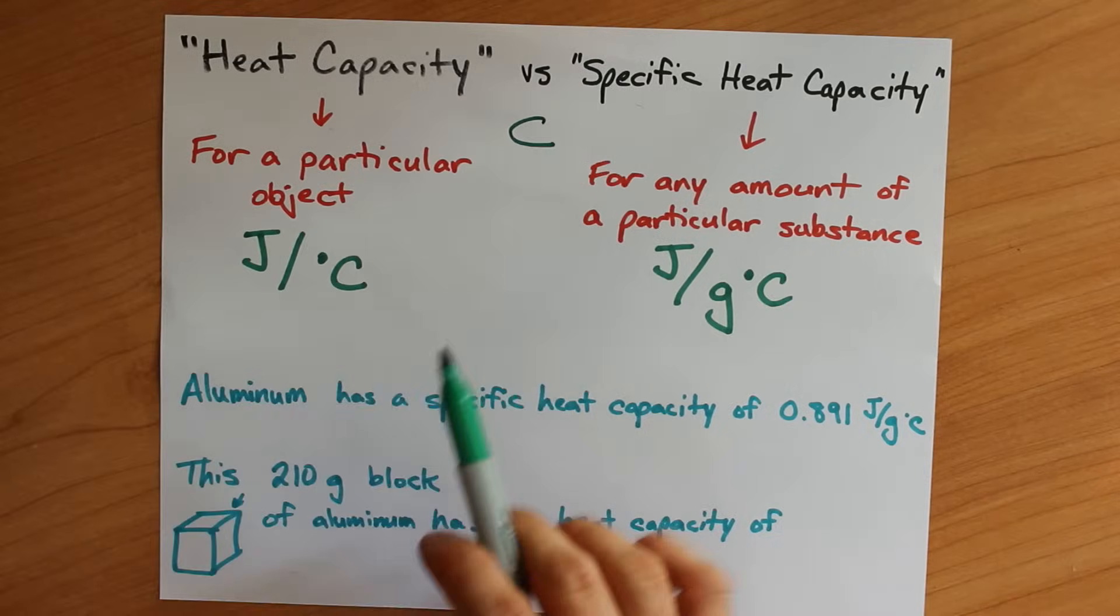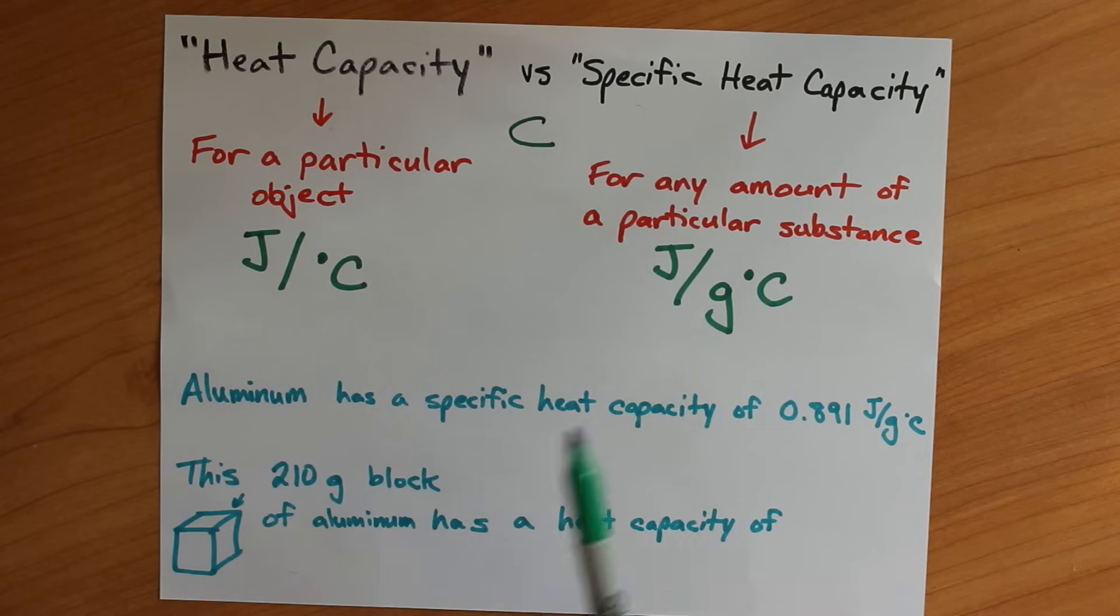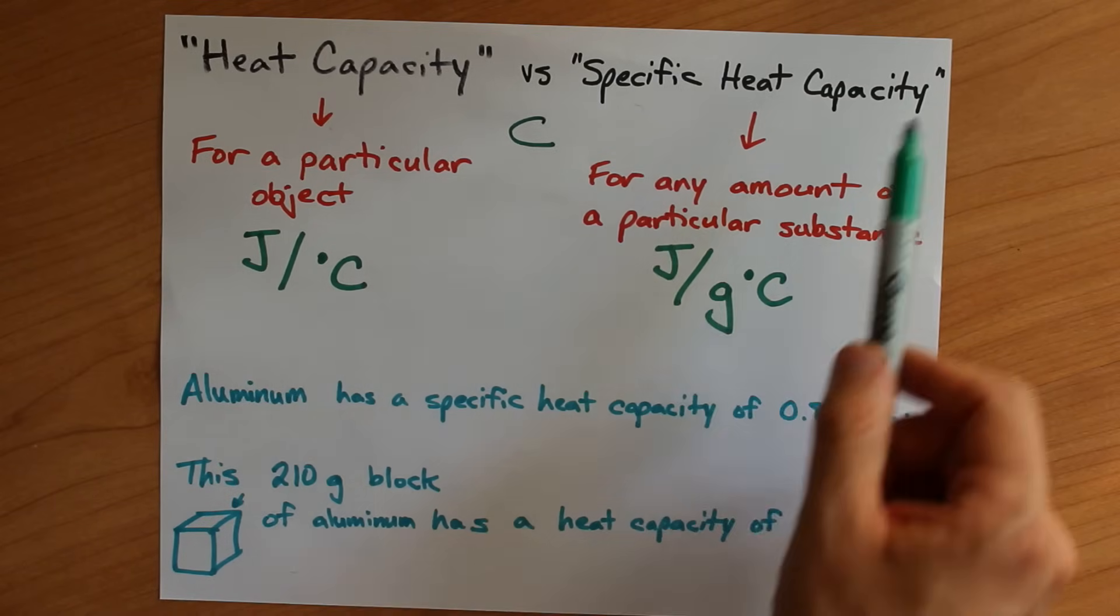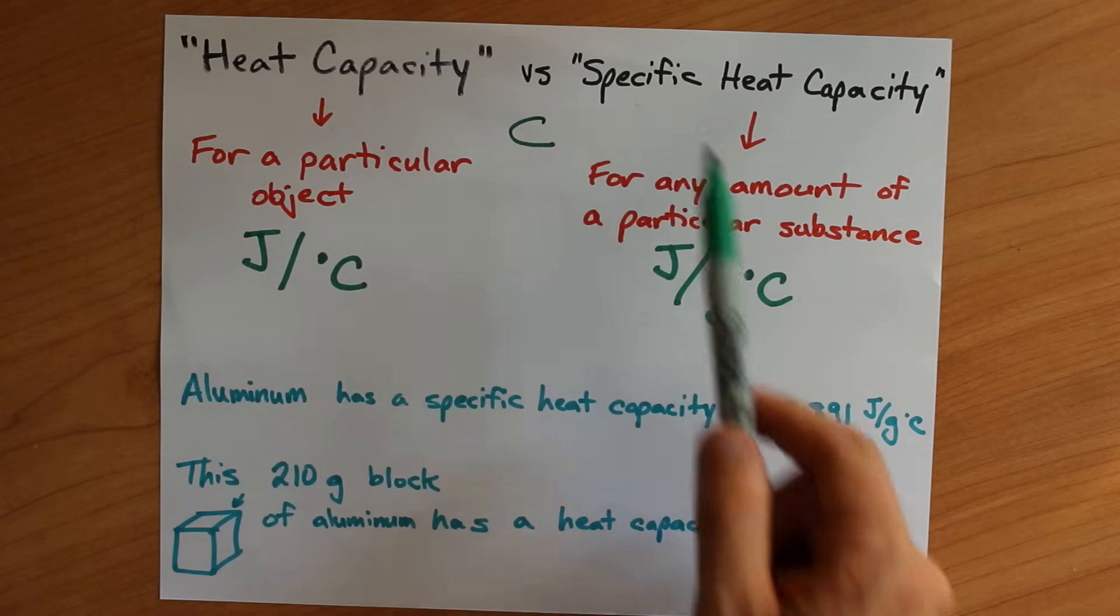What really matters here is that heat capacity has units of joules per degree Celsius, and specific heat capacity is joules per gram degree Celsius.